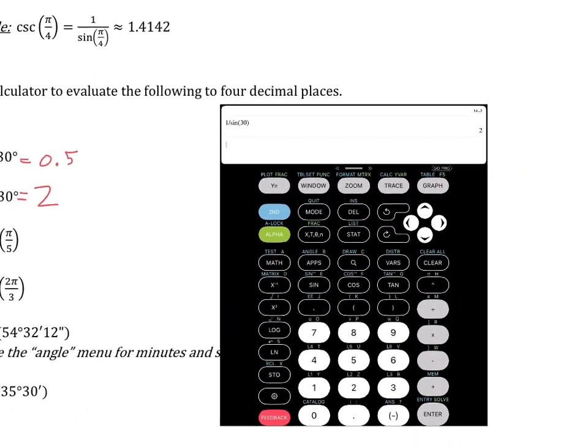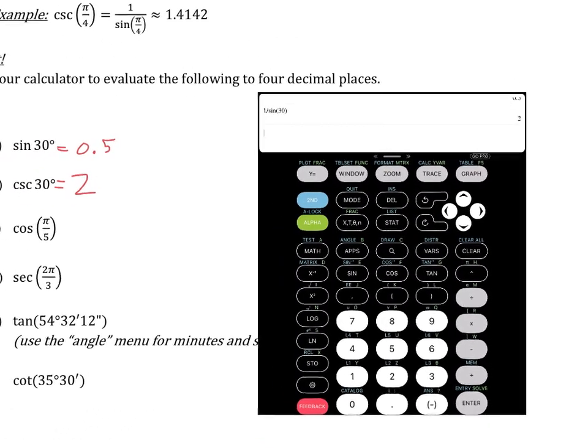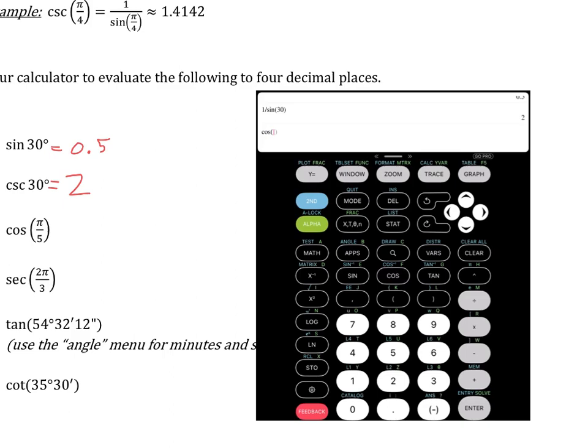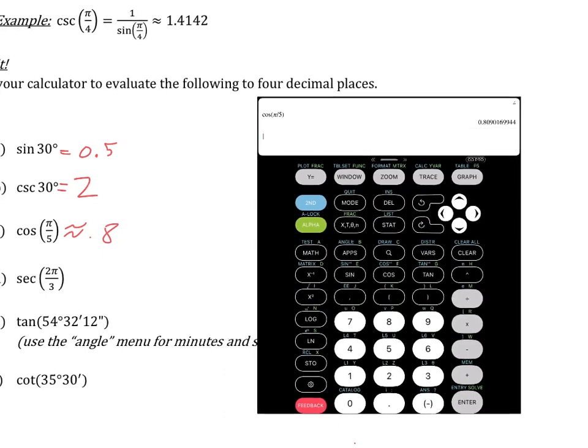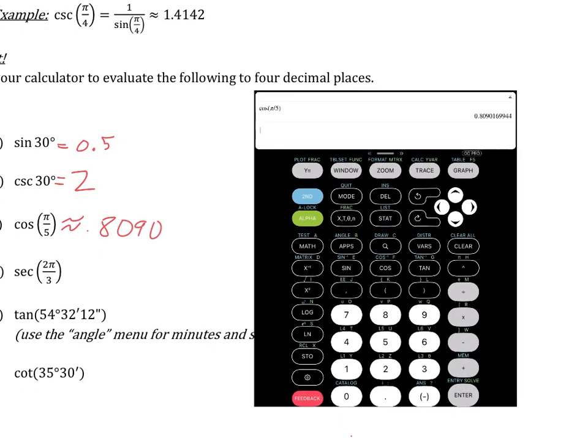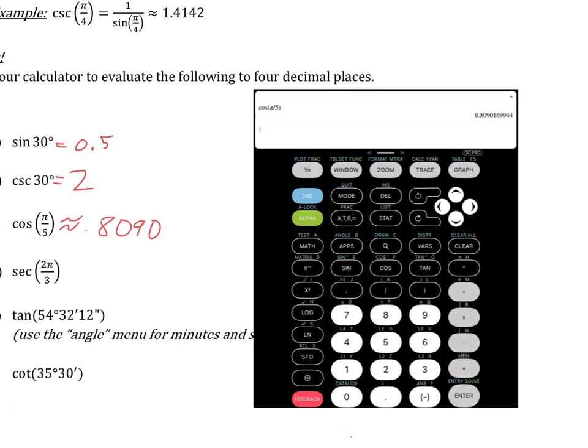We want the cosine of pi over 5. So cosine of pi, and you're going to have a pi key on your calculator. It's right above this caret key. You've got to hit second because it's in a different color there. And we want pi divided by 5, and that gives us 0.8090. So on and so forth. Now we're going to round it off, and typically we want to have four decimal places there. So we'll do 0.8090.